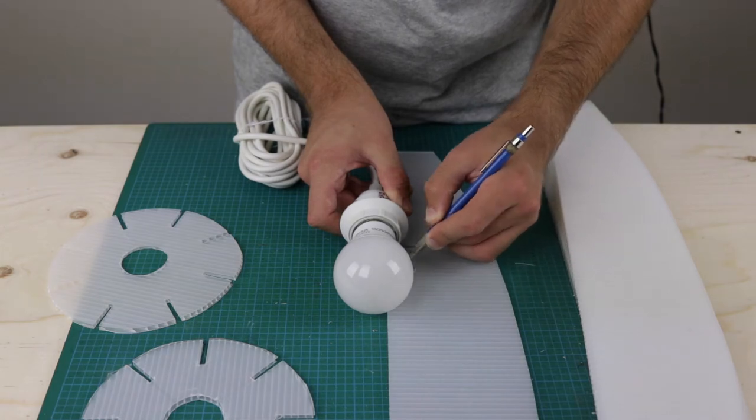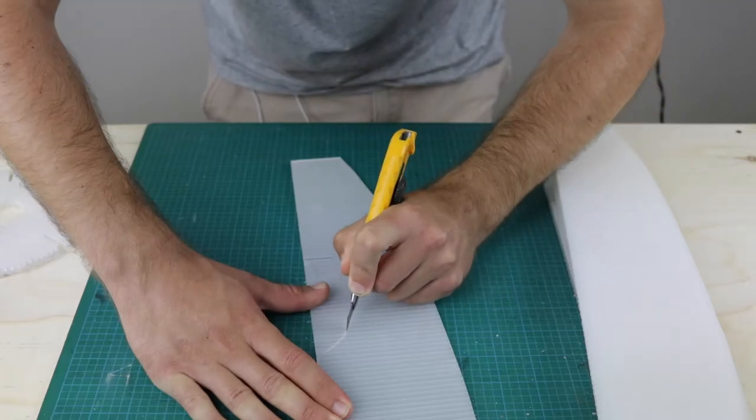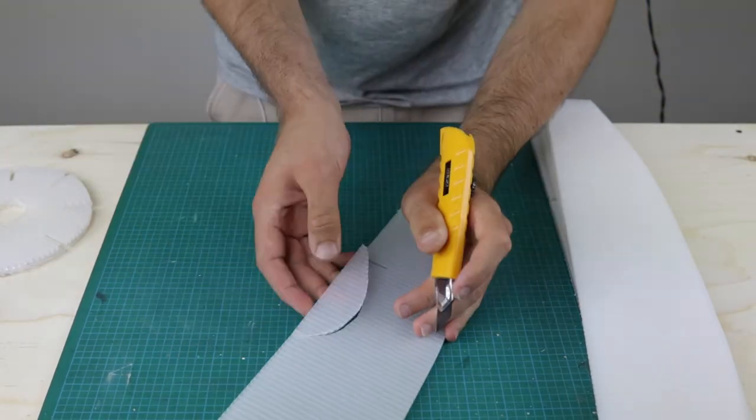Next I traced and cut the profile of my light bulb making sure to add a bit of an extra gap so there's no contact between the plastic and the bulb.